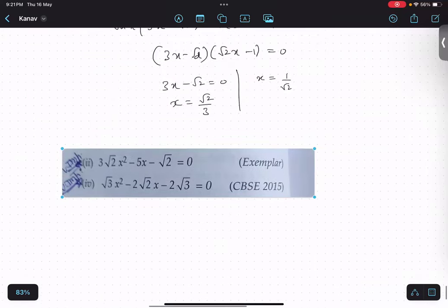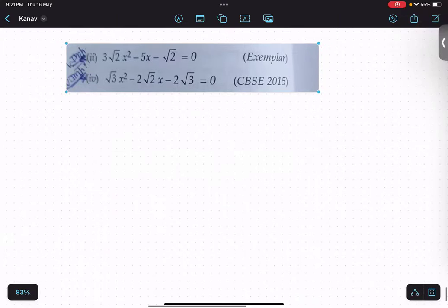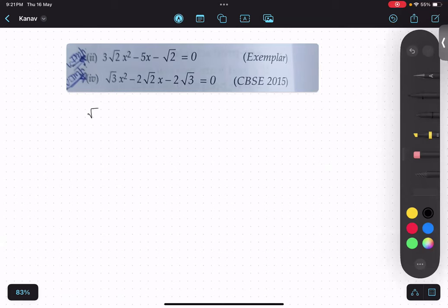The way we did the second part, similarly, third part or fourth part is also same. So √3x² - 2√2x - 2√3 = 0. Step number 1, multiply first and the last term. √3 multiplied by 2√3. What will be the answer? Once again, it will be 6.